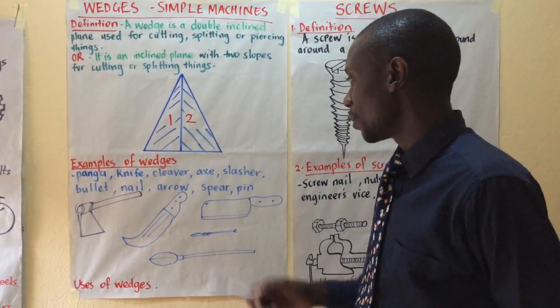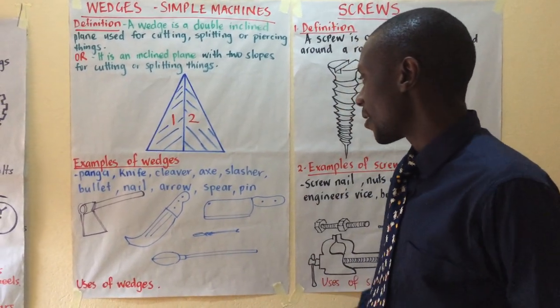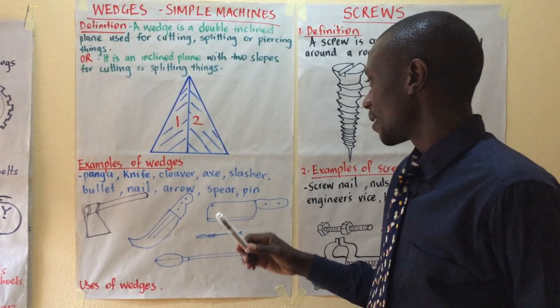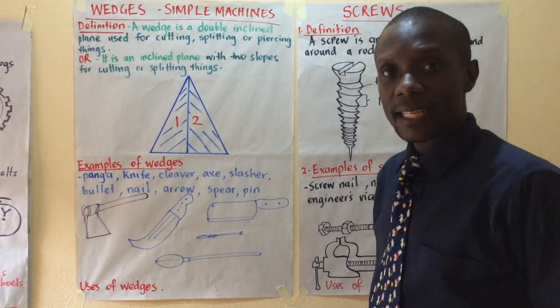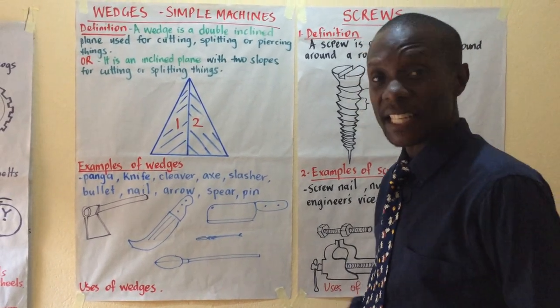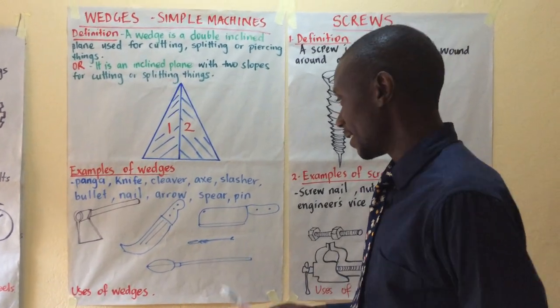Examples of wedges used for piercing: we have a bullet, nail, arrow, spear, pin, needles, and so on.